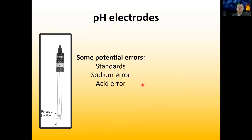Additionally, there's something called acid error, which is kind of like the sodium error. The acid error is when you have too many protons in your solution and you end up saturating the surface of your pH probe — filling it up until there's no more room for additional protons. In that case you just stop measuring accurate pH values. If the actual pH is negative one and your electrode saturates at pH one, you're just going to measure a pH of one even though it's actually a lot lower.